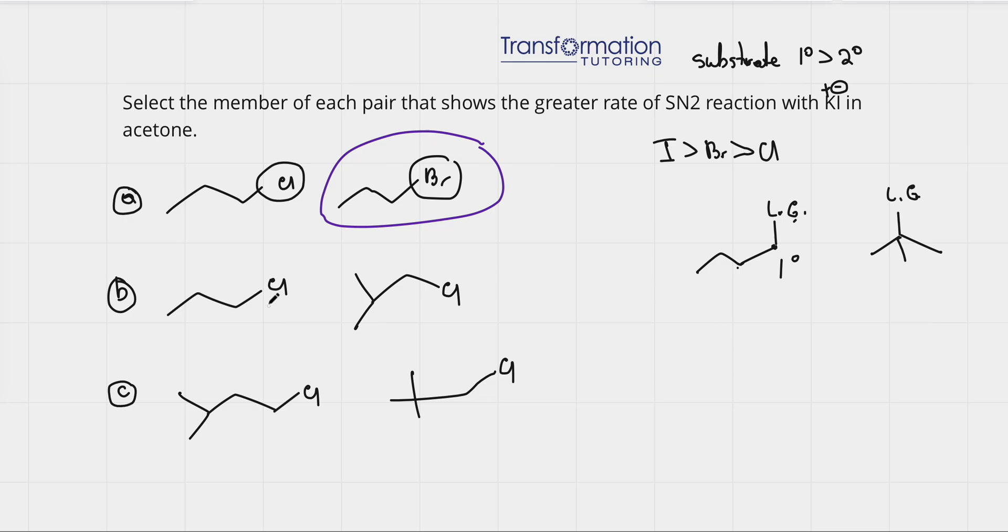Now, let's look at B. What is the difference here? The leaving group is the same, so we can't base our decision on that. What kind of substrate do I have? So, this chlorine is attached to a carbon that's attached to one carbon only. This is primary. This chlorine is attached to a carbon that's attached to one carbon only. It is primary also.